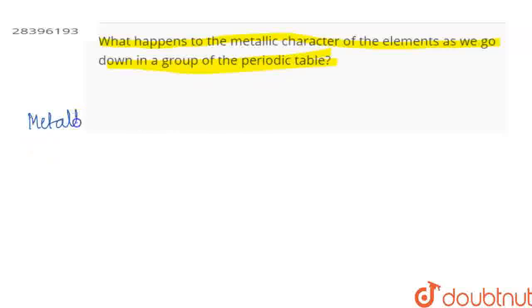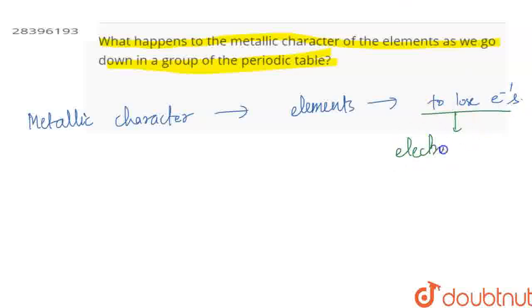So, let's talk about the metallic character. The metallic character is basically a property of those elements which have the tendency to lose electrons. Those who have the tendency to lose electrons have the property of metallic character. And to lose electrons will depend on how much your element is electropositive.